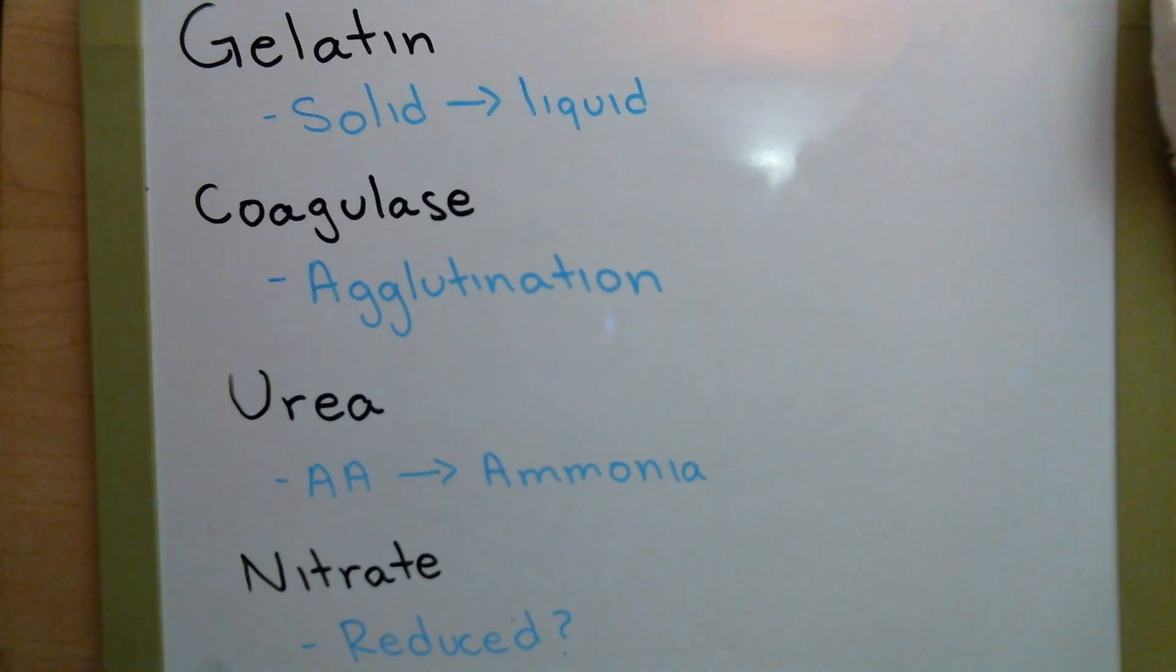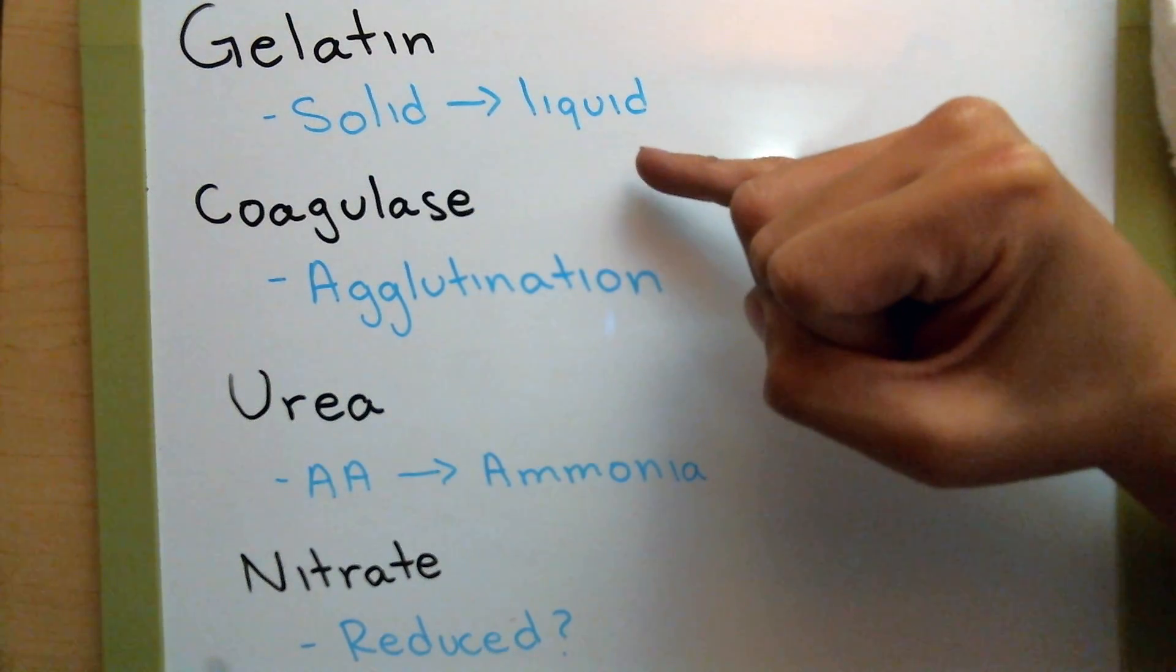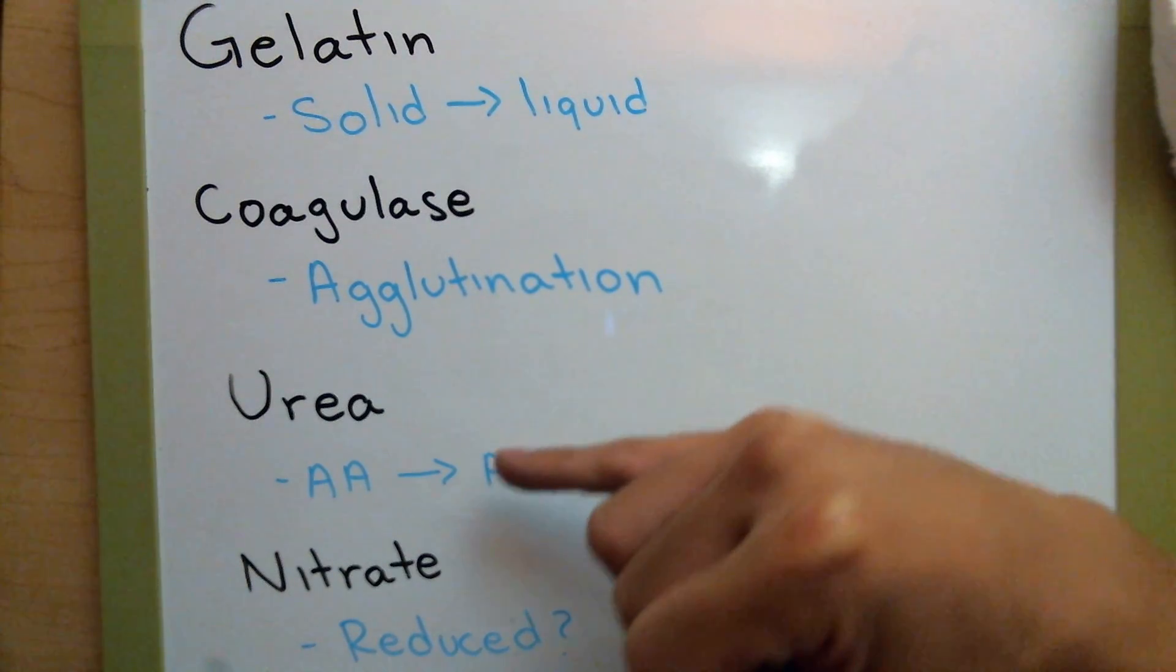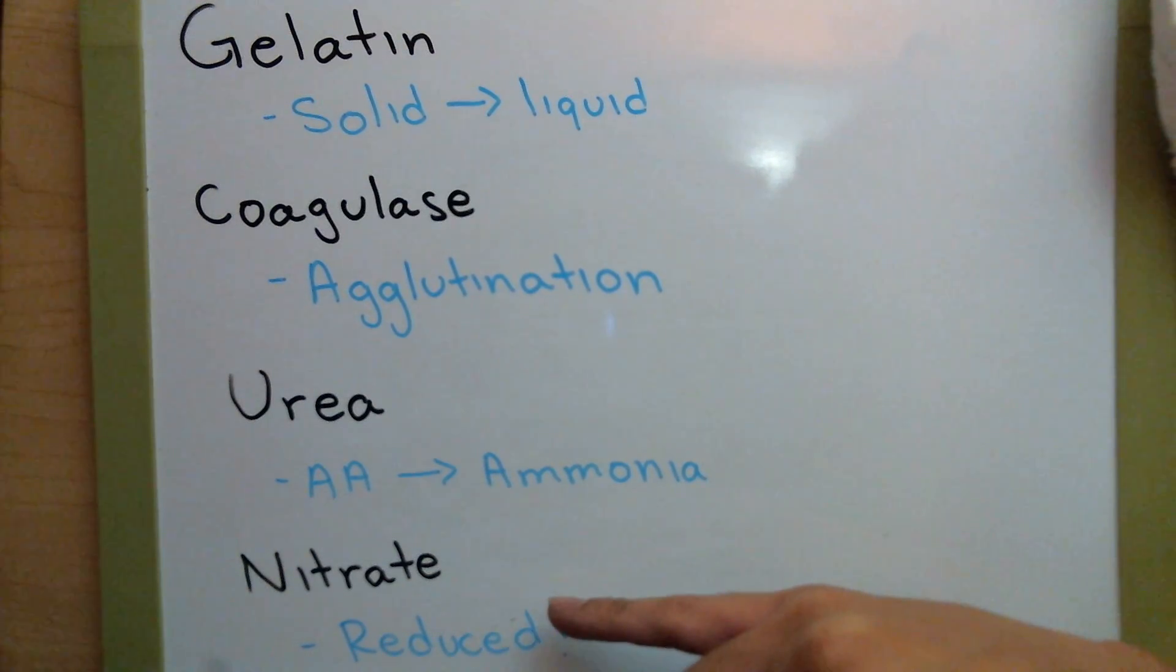So just to briefly touch over everything, in the gelatin test, we're looking to see if our solid became liquid. With coagulase, we're looking for agglutination. Urea, we're looking if certain amino acids are converted to ammonia. And in the nitrate test, we're looking to see if that nitrate was reduced to some other form, whether it be nitrite, nitrogen, or in some cases we don't know what it is, but it still is reduced. With that, that's the end of this video. I hope it was helpful for you guys. If you have any questions, feel free to shoot me an email.